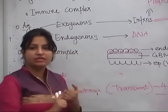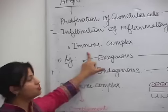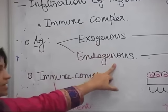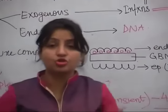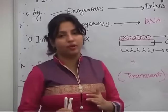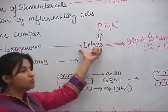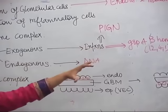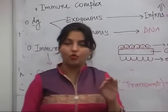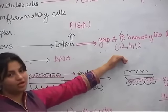Whenever you study kidney, first ask: is it an immune complex mediated disease? Yes, APGN is immune complex mediated. The antigen can be exogenous or endogenous. The most common exogenous antigen is infection, so this is also known as post-infective glomerulonephritis (PIGN). The most common infection causing APGN is group A beta-hemolytic Streptococcus, strains 12, 4, and 1. Sometimes the antigen can be endogenous, like DNA, causing SLE nephritis, which is also a type of APGN.